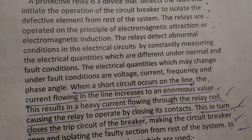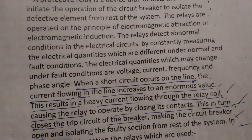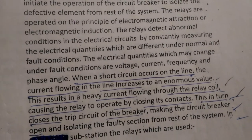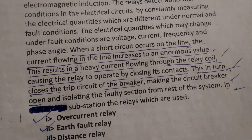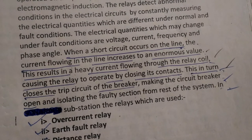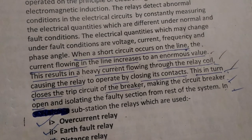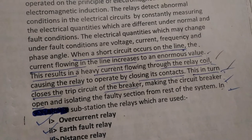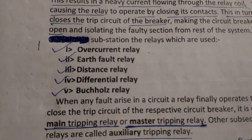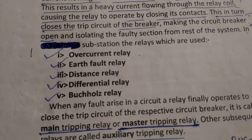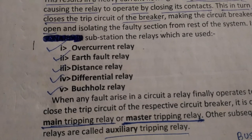The electrical quantities which may change under fault conditions are voltage, current, frequency, and phase angle. When a short circuit occurs on the line, the current flowing in the line increases to an enormous value, causing heavy current to flow through the relay coil, causing the relay to operate by closing its contact. These in turn close the trip coil of the circuit breaker, making it open and isolating the faulty section. The relays generally used in substations are overcurrent relay, earth fault relay, distance relay, differential relay, Buchholz relay, and oil surge relay.